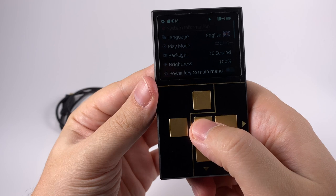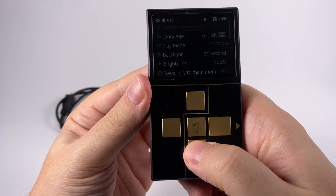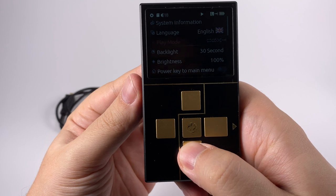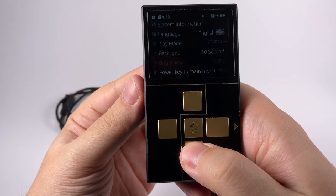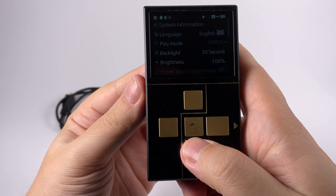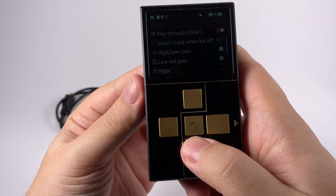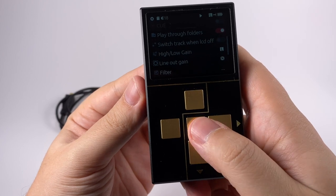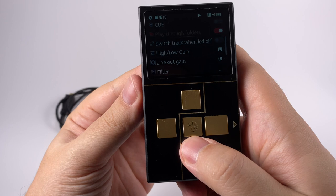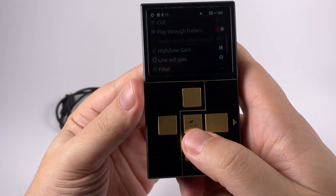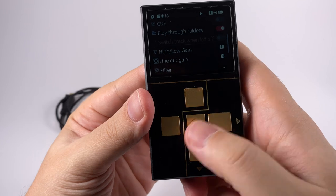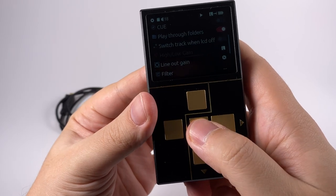Also there are settings. In settings you can get system information, languages, a few of them, play mode, backlight time, brightness, power key to main menu if you want this function, and queue file support, play through folders or not, will tracks be switchable when screen is off.